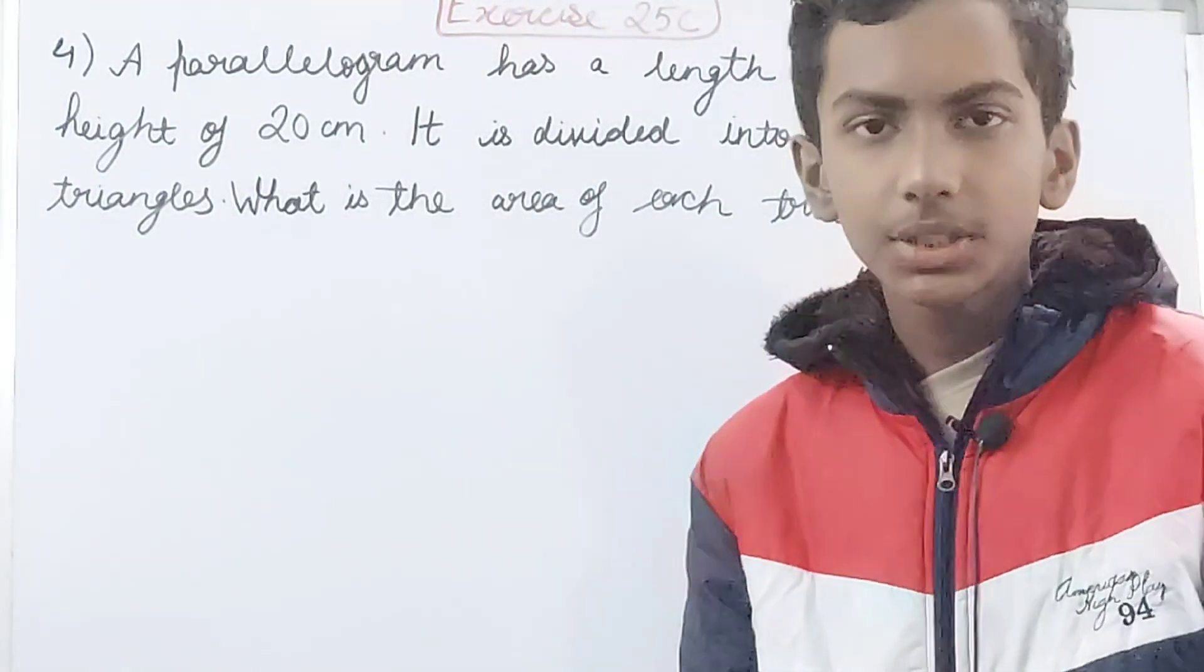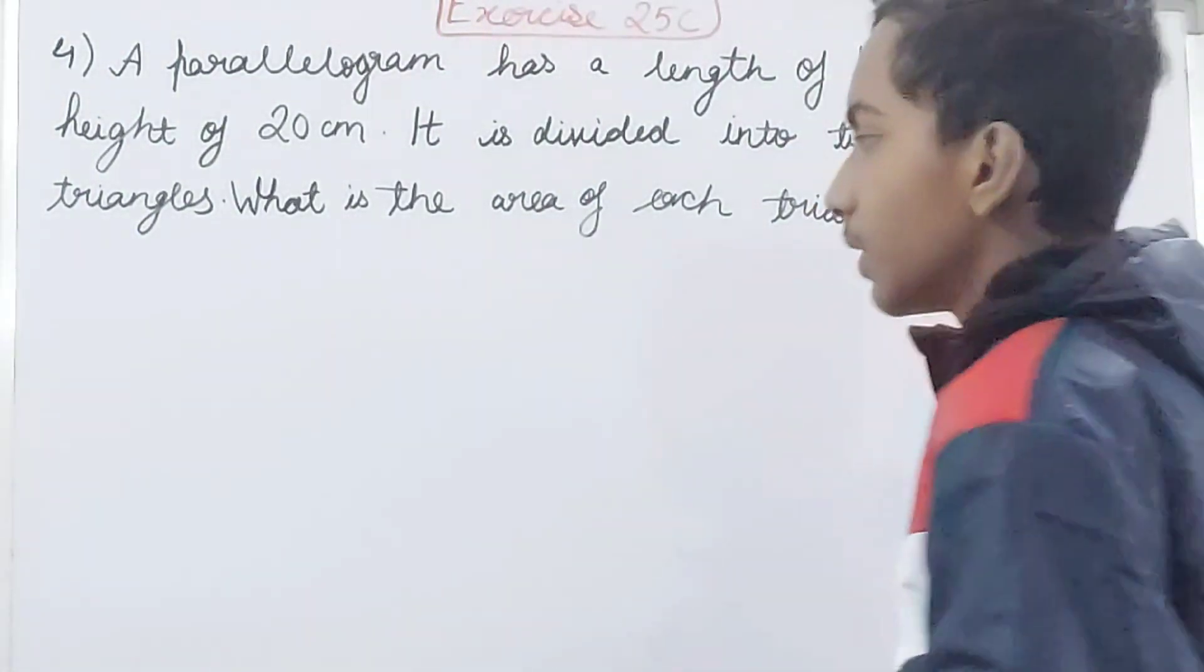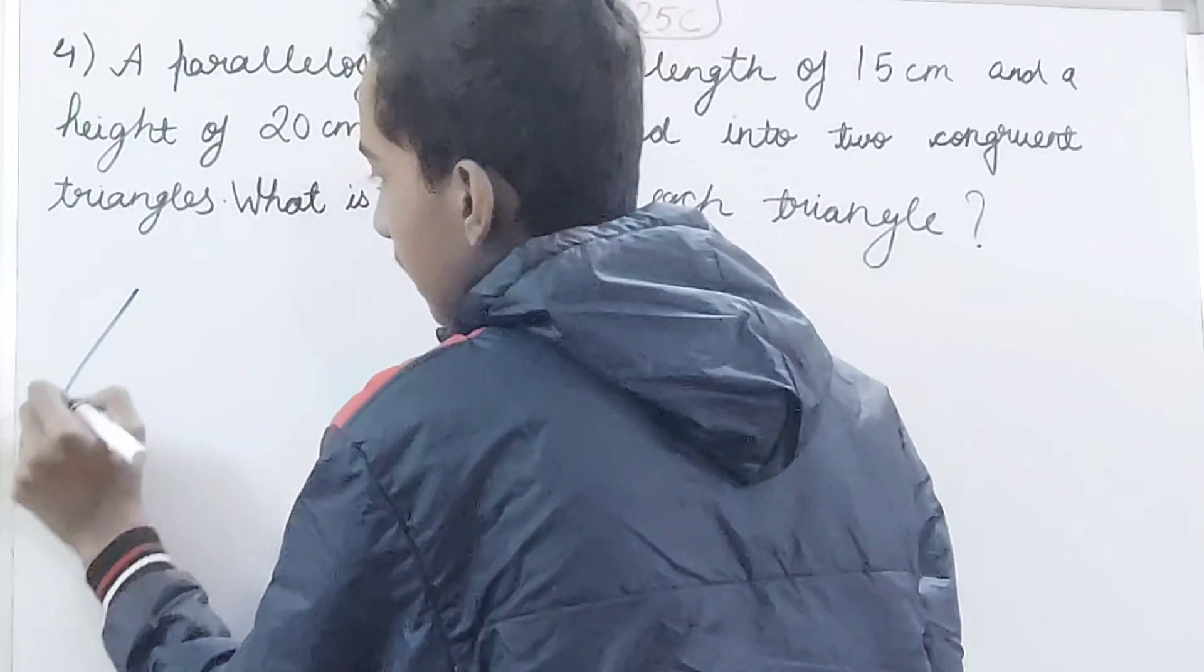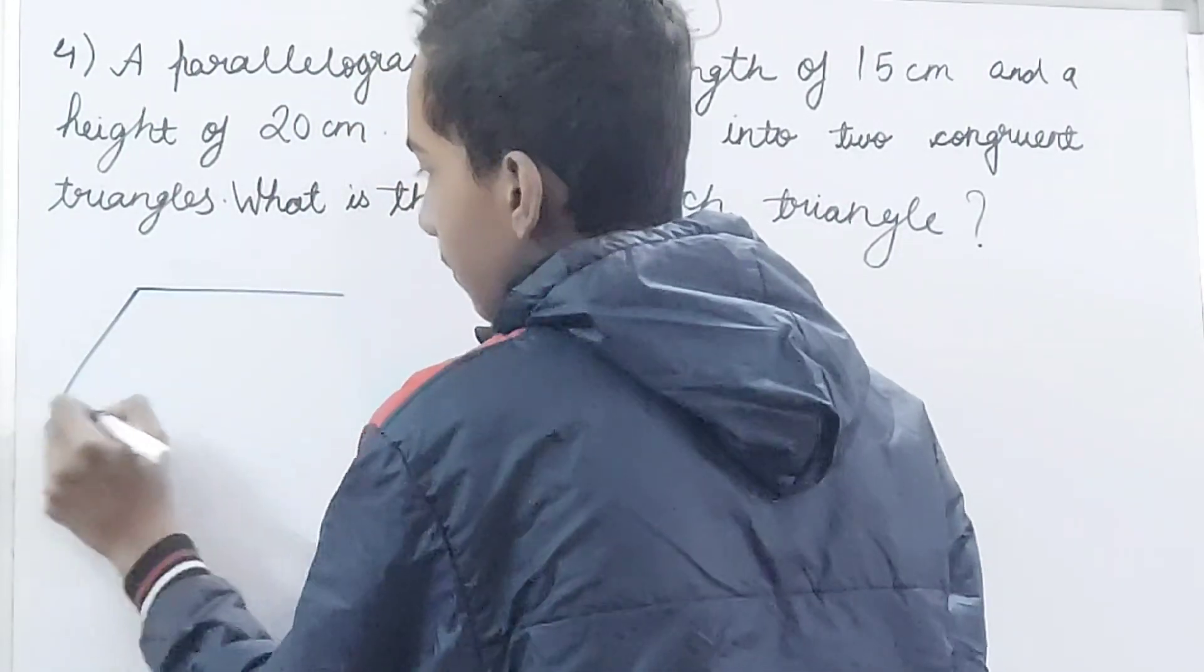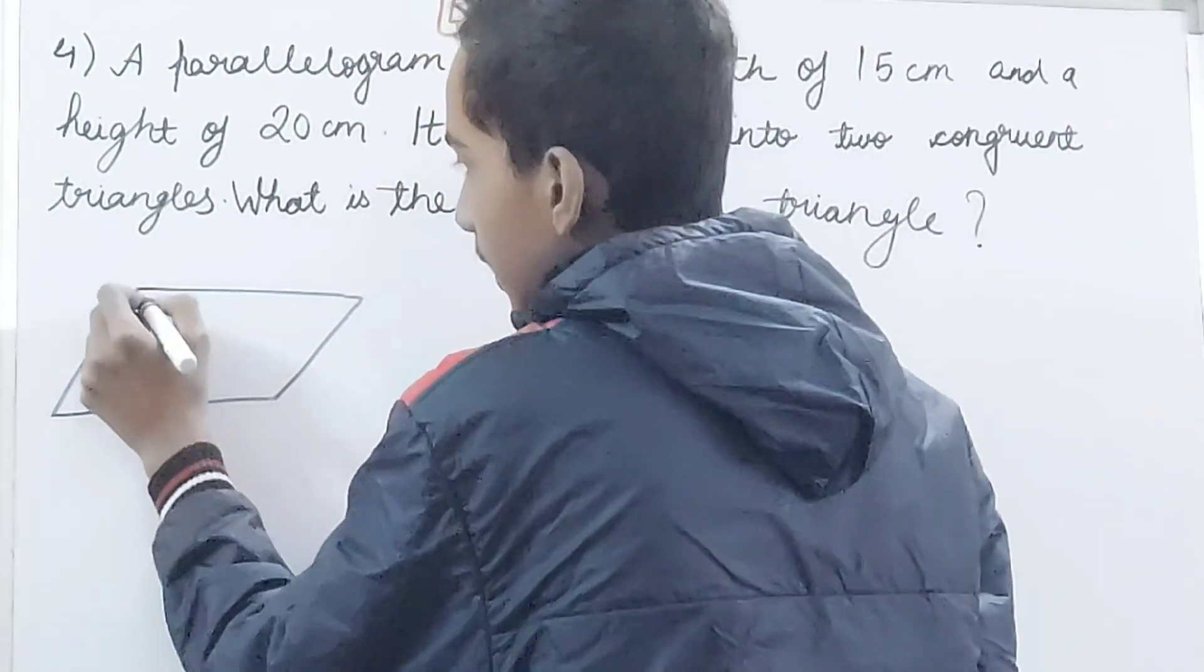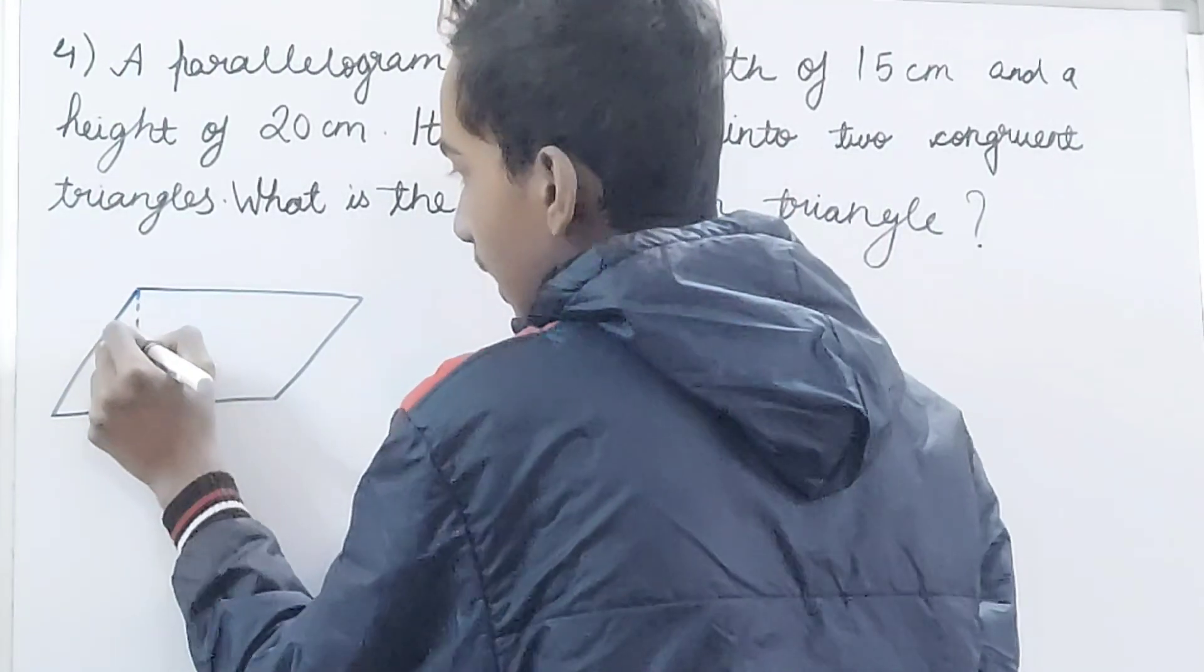At first you might not be able to understand this question but if you draw the figure you can see that suppose this is my parallelogram and this part is my height, this dotted line is the height of this parallelogram.